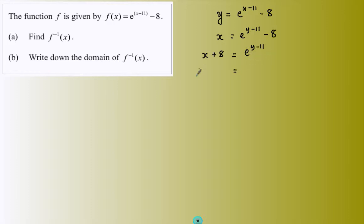Natural logarithm will be the thing to undo this e to the power. Logarithm of e, and that's gone, leaves us with the y minus 11.